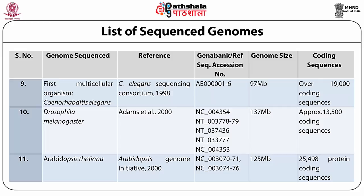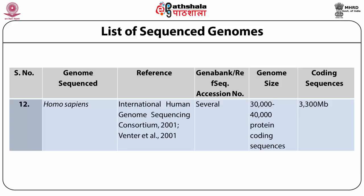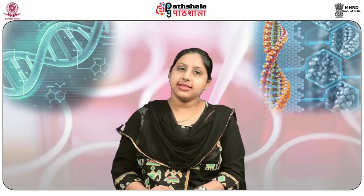The next multicellular organism to be sequenced was Drosophila melanogaster in the year 2000, with a genome size of 137 MB and approximately 13,500 coding sequences. Arabidopsis thaliana, the mustard plant, was next in 2000, with a genome size of 125 MB and 25,000 protein coding sequences. The human genome was sequenced in 2001, with its final draft submitted in 2003, initially said to have 30,000–40,000 protein coding sequences, a number which has since been reduced to about 20,000.